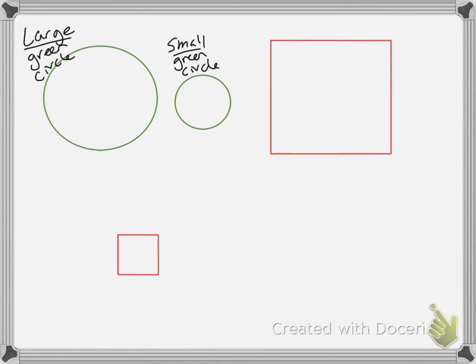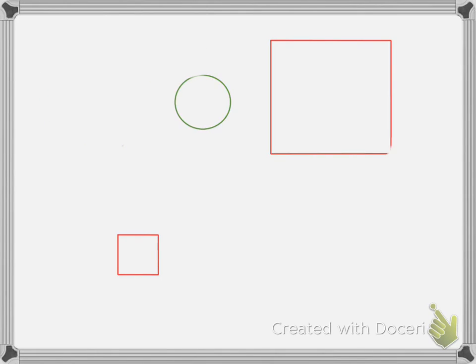I could also have the difference. So let's say I have my small green circle and I had a small green square. So these two...